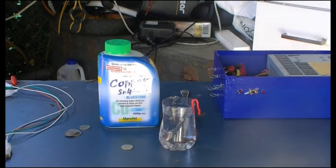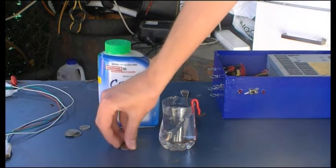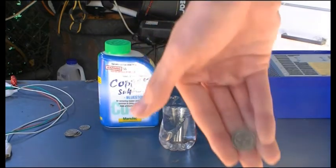Hi guys, Harry here. Welcome to the process. So today we're going to be trying some copper electroplating onto these very nice Australian five cent pieces.